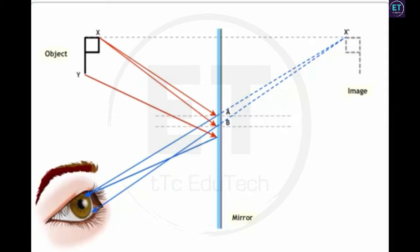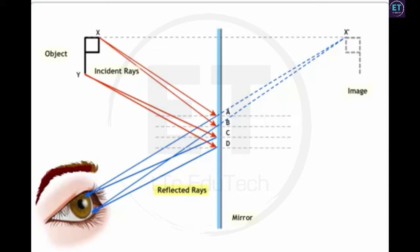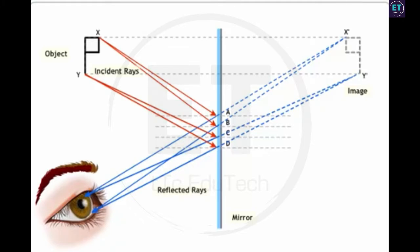Consider one more point Y on the object. A light ray from Y is incident on the mirror at C, and the reflected ray travels to the eye. Similarly, another ray from Y is incident on the mirror at D and is reflected to travel to the eye. Like the two rays from A and B, the two reflected rays from C and D are divergent, and when extended beyond the mirror, meet at Y'. Thus, Y' is the image of point Y on the object. Similarly, rays from all points on the object are incident on the mirror, and all these divergent rays are extended beyond the mirror to form the complete image of the object.